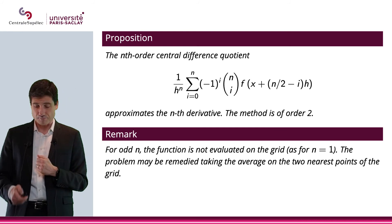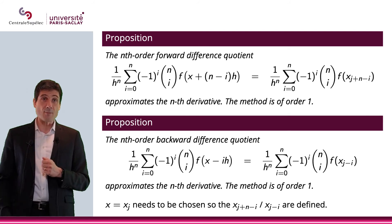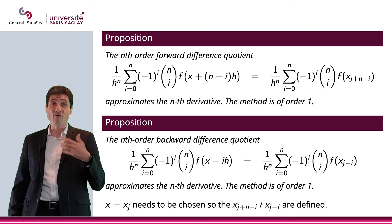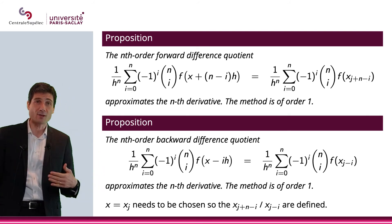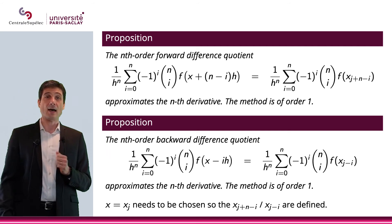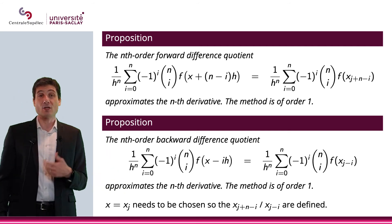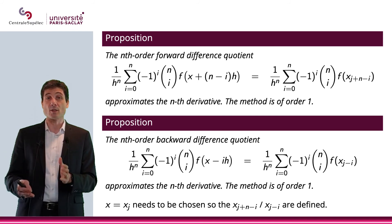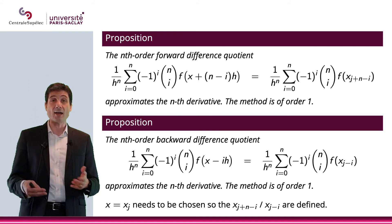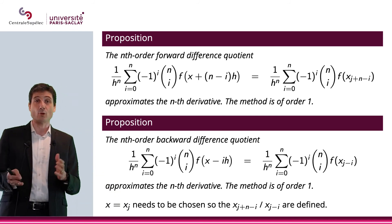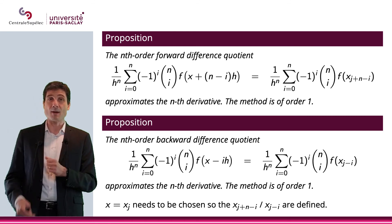You can do the same thing for the nth-order forward difference quotient and backward difference quotient. Here are the formulas. Again, x, which is x_j, needs to be chosen so you can define all of these elements. If you're too close to the border, this might be a problem.